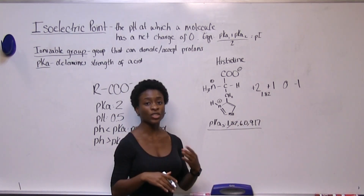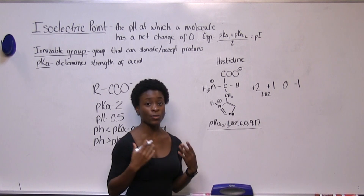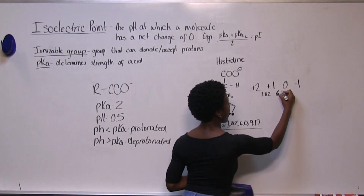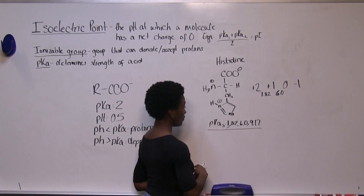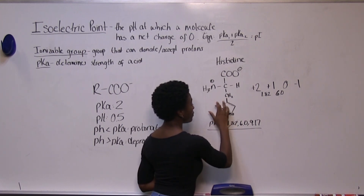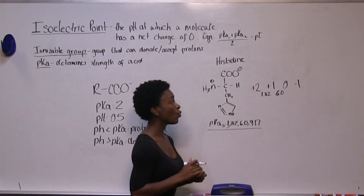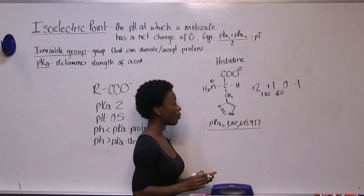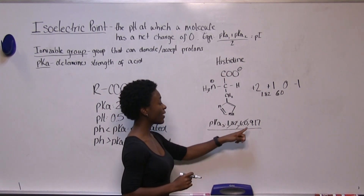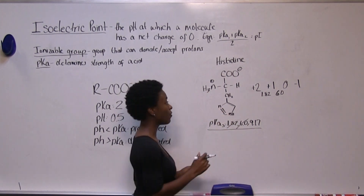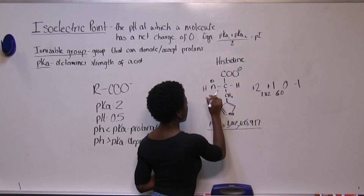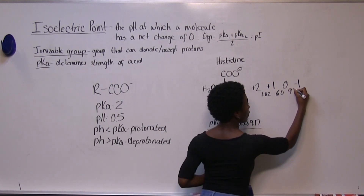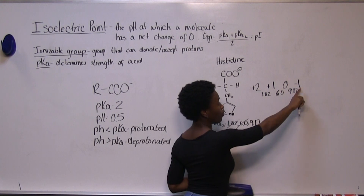We keep adding hydroxide ions to make the solution more basic. The next pH we reach is six, associated with the nitrogen group in the side chain, so that hydrogen pops off and now we're left with a zero charge. The last pH we pass is 9.17, associated with the amino group at the alpha carbon, so it loses a hydrogen and now we have a negative one charge.